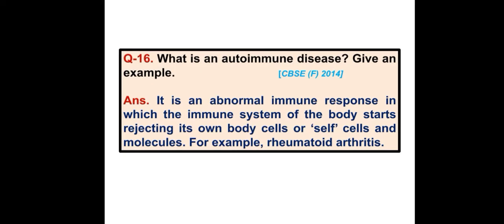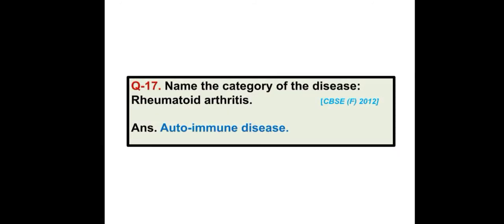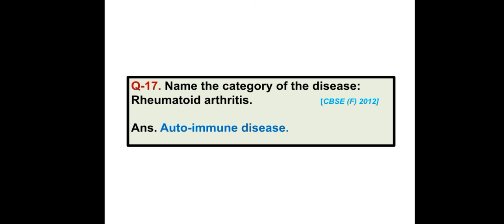What is an autoimmune disease? Give an example. An autoimmune disease is an abnormal immune response in which the immune system of the body starts rejecting its own body cells or self-cells and molecules. For example, rheumatoid arthritis is an autoimmune disease in human beings.